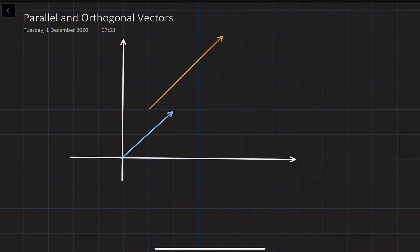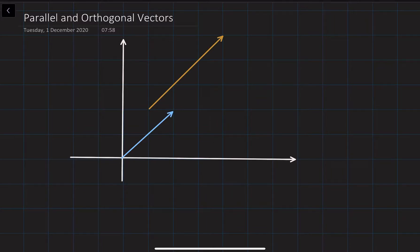If you remember from school, we learned about parallel lines as lines which never intersect. But for vectors, parallel vectors are going to intersect infinitely many times. We are always going to deal with position vectors, so essentially both vectors should start from the origin.